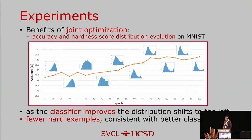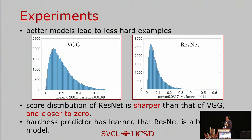We first evaluate the learned hardness scores. We show the evolution of the learned hardness score distribution on the MNIST test set over training. As the classifier improves, the distribution shifts from right to left, meaning fewer and fewer examples are considered hard over time — similar to how humans find tasks easier as they learn more. We also compare the final learned hardness distribution for two different network architectures: VGG and ResNet. The score distribution of ResNet is sharper and closer to zero than VGG, indicating better models lead to fewer hard examples, and that the hardness predictor has learned that ResNet is a stronger model.